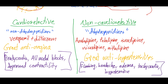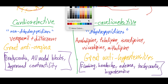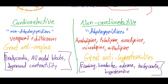One thing to add for the cardioselective non-dihydropyridines: in addition to anti-anginals, they're often used for atrial tachycardias — A-fib, A-flutter. So those are class 4 calcium channel blockers.